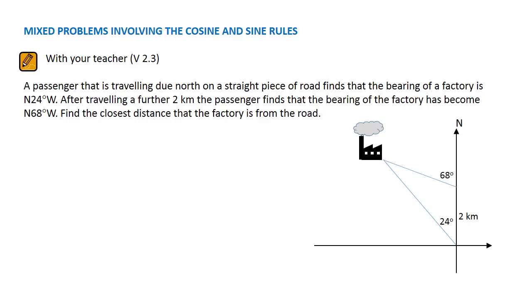Now the closest distance is achieved when the road makes a right angle with the line to the factory. Let's label the diagram for reference: A, B, C, and F for factory.